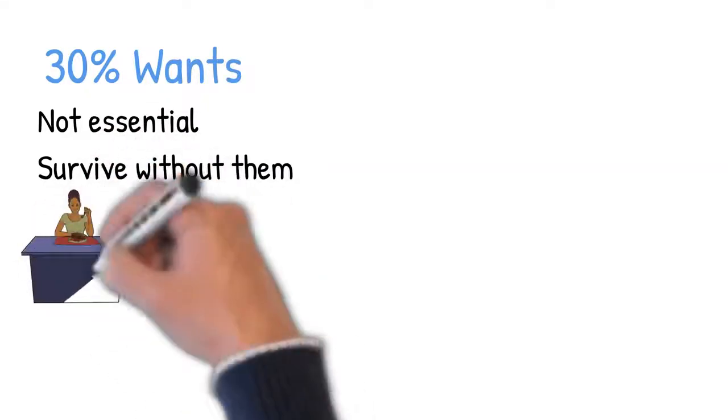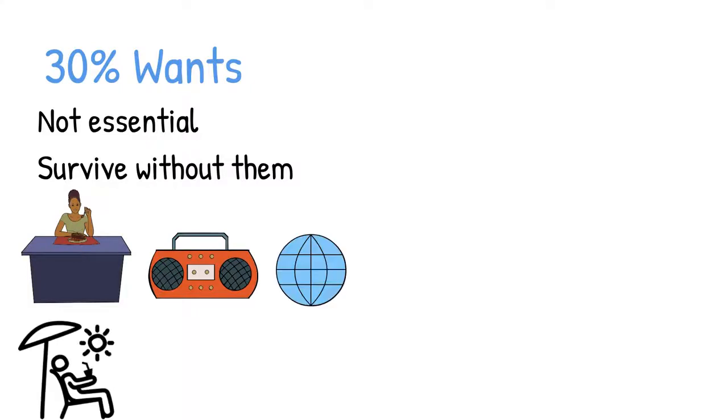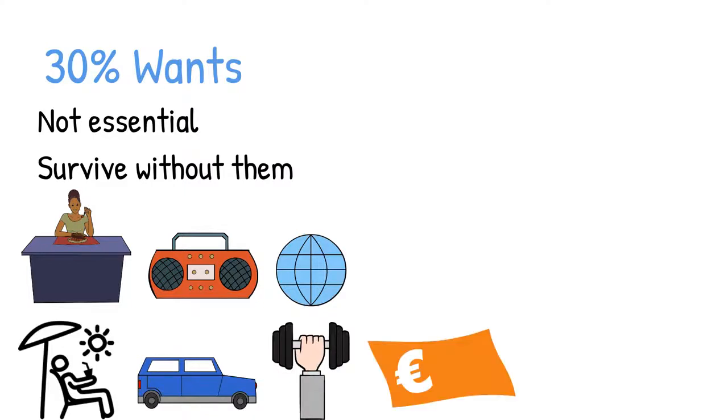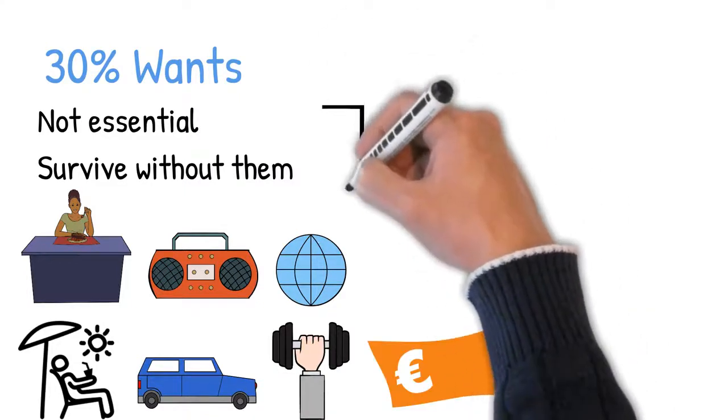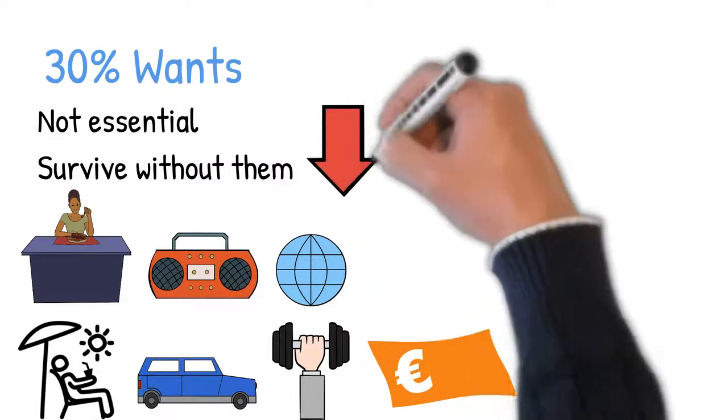Popular wants to include in your budget are eating out, electronic gadgets, fast internet, vacations, a new car, gym memberships, or tickets to concerts and sports events. Senator Warren advises that you allocate a maximum of 30% of your after-tax income to your wants bucket list.